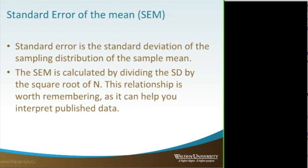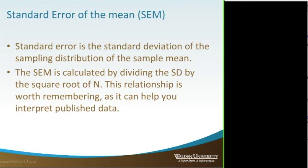The standard error of the mean is different from the standard deviation. The standard deviation is the average variance from the mean in your sample. The standard error looks at: if you took a sample with a mean and standard deviation, then took another sample, how close would those two be? Like flipping a coin — while it should be 50% heads and 50% tails, there's always going to be some variability, maybe 55/45 or 52/48.